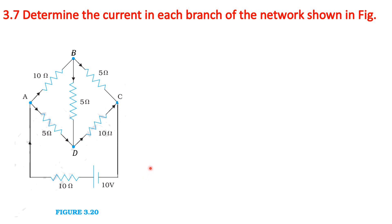Welcome to Rajavali Education channel. In this video we are going to see one of the exercise questions from 12th NCERT Physics Chapter 3. The question is: determine the current in each branch of the network shown in the figure.